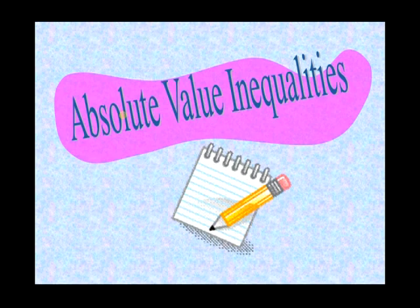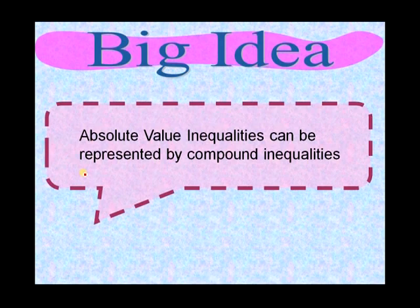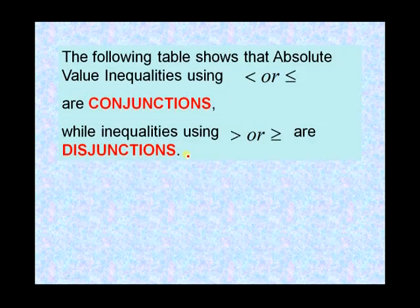Absolute Value Inequalities. The big idea is that absolute value inequalities can be represented by compound inequalities — we learned about compound inequalities last lesson. So basically, we've got absolute value inequalities that we're going to break down into conjunctions and disjunctions.